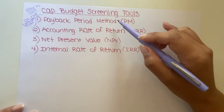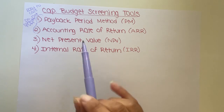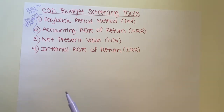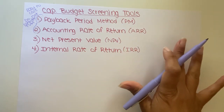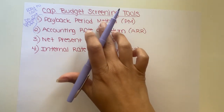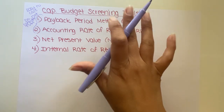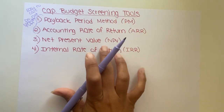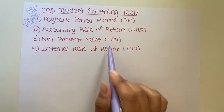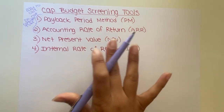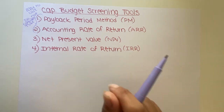That's why payback period and accounting rate of return are used first. A company might just pick one — say they require a payback period of five years. They can quickly calculate that for all 20 competing projects. Maybe only half of those 20 meet the five-year payback criteria. Those 10 can then continue on to the more sophisticated formulas, consider the time value of money, and then be prioritized to make a final recommendation.